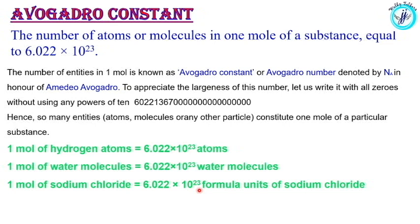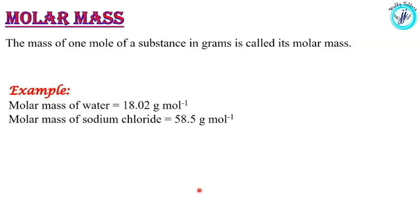Molar mass: one mole of a substance means its mass in grams. So molar mass of water means 18.02 grams per mole, and molar mass of sodium chloride means 58.5 grams per mole.